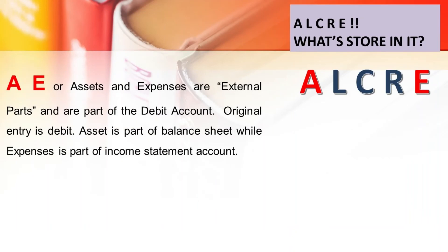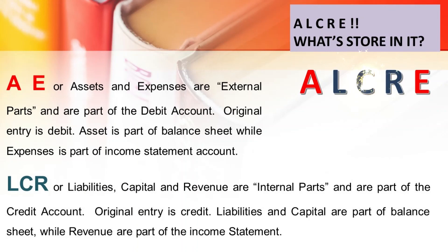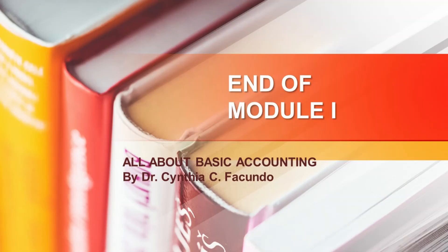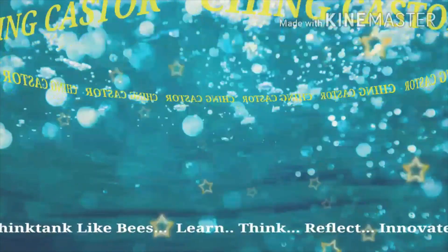Under ALCRE, A and E — asset and expenses — are debit accounts; their original entry is debit. Asset is part of the balance sheet while expenses are part of the income statement. LCR — liabilities, capital, and revenue — are credit accounts; their original entry is credit. Liabilities and capital are part of the balance sheet while revenue is part of the income statement. This is the end of Module 1, all about basic accounting. I hope you learned something. Bye-bye.